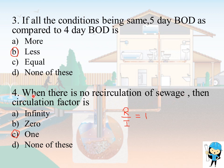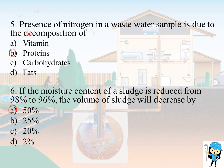When there is no recirculation of sewage, the circulation factor is 1, that is R divided by I equals 1, where R is the recirculated sewage and I is the total inflow of raw sewage. Presence of nitrogen in a wastewater sample is due to the decomposition of proteins.